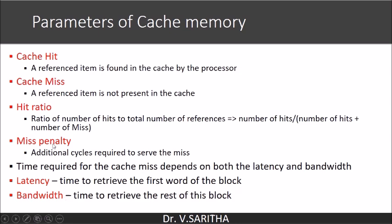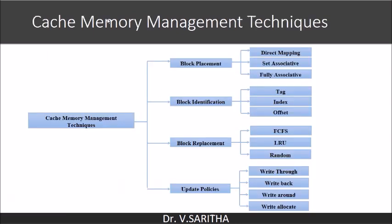Cache memory management techniques are divided into four categories: block placement, block identification, block replacement, and update policies. Block placement includes direct mapping, set associative, and fully associative mapping. Block identification requires a tag, index, and offset. Block replacement strategies include FIFO, LRU, random, and other algorithms. Update policies include write through, write back, write around, and write allocate. Besides these, there are read policies as well.